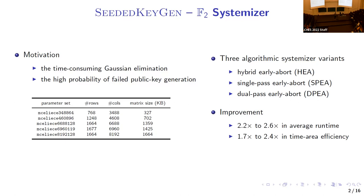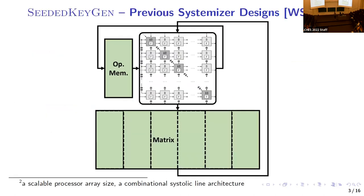The Gaussian elimination design usually uses a rate of computation nodes organized in a systolic line or systolic network, which is fine for relatively small matrices, but for large matrices like Classic McEliece this requires too many resources. Previous work proposed decomposing the matrix into column blocks and applying elimination column by column. The design from WSN16 adopted this approach and has the advantage that the processor array size can be chosen freely — a feature also adopted in their systemizer design.